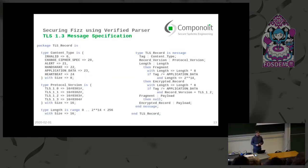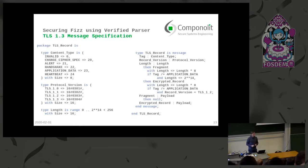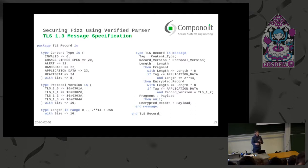Here you see an excerpt of the message specification — in particular, the specification of a TLS record message. On the left side you specify elementary types like enumerations and integers. On the right side you see the specification of a TLS record message where we specify the message format. Such a TLS record message has a tag which is the content type, a version field, a length, and a payload field.